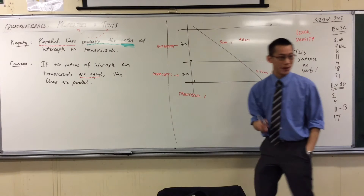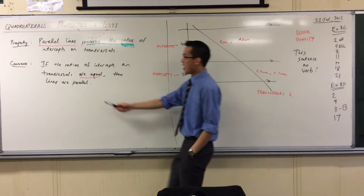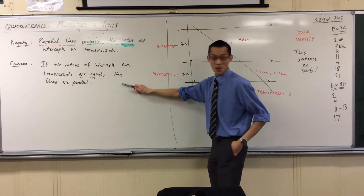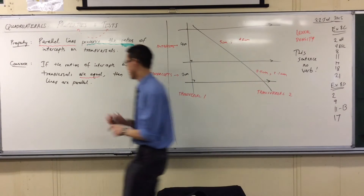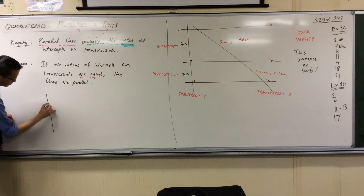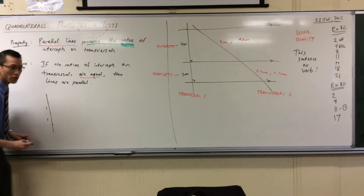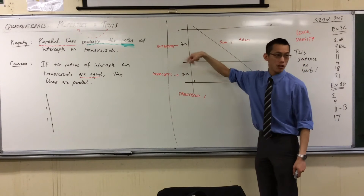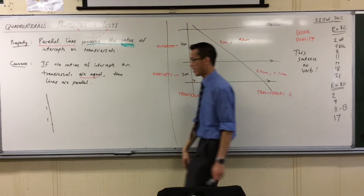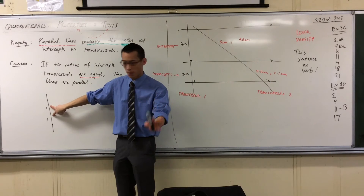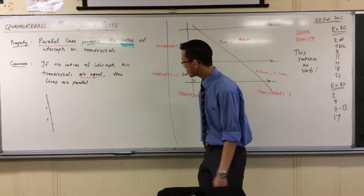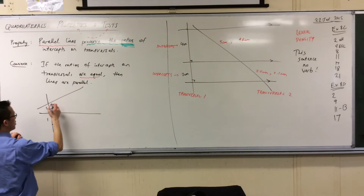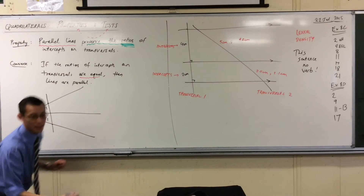With your ruler in hand, I'm going to quickly draw some transversals where the intercepts are quite clearly in equal ratio, but the lines are not parallel. We start with a transversal and divide it up so you get a nice, neat ratio right away — equal parts. Then I draw a second transversal. Are these lines parallel?